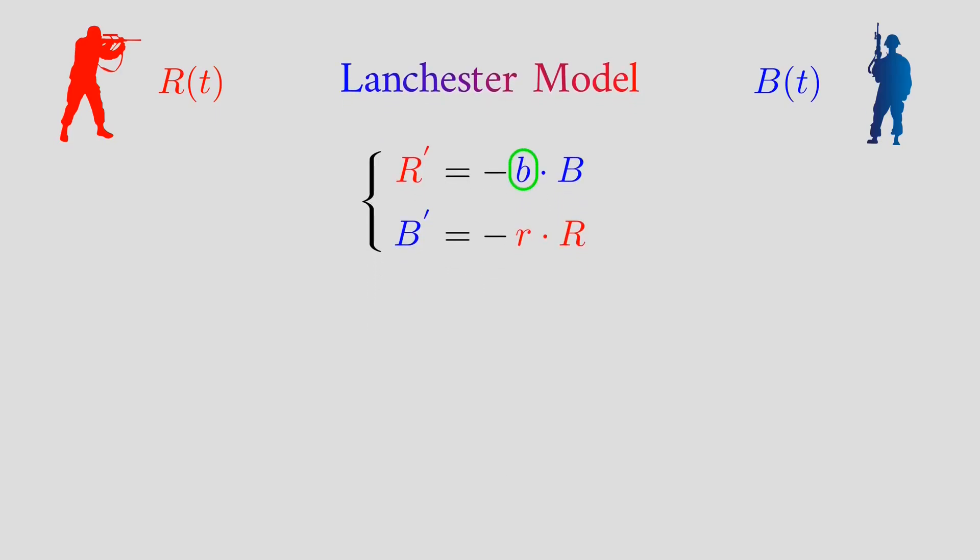We start with these constants. Small b is the fighting effectiveness of the blue army. We also call it the attrition rate. And small r is the fighting effectiveness or the attrition rate of the red army.